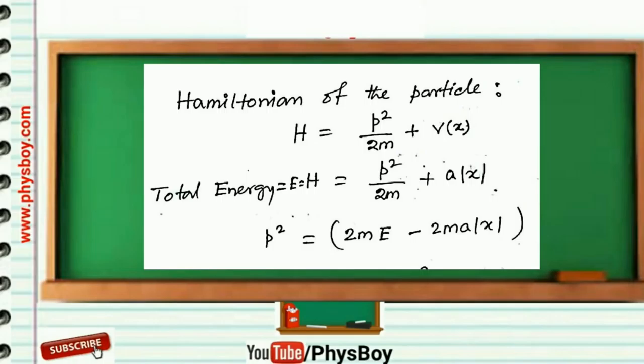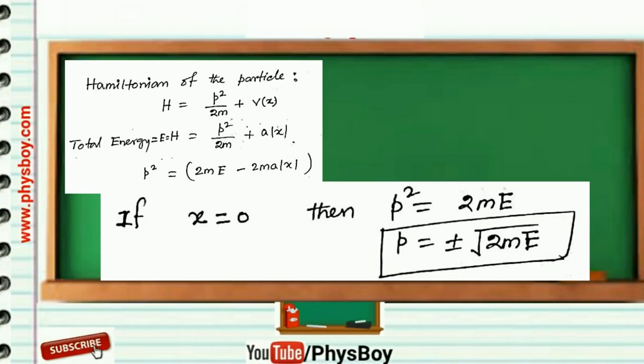From this equation, you can get p² = 2mE - 2ma|x|. So if you put x = 0, then you will get p = ±√(2mE).